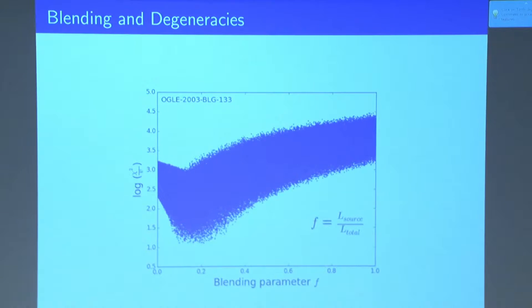So this is a distribution of the chi-squared and the blending parameter, F, which is a ratio of the luminosity of the source to luminosity total. So low blending parameter equals high blending. And in this graph, we see that the best fits, the lowest chi-squared, are in a range of values with low blending parameter and therefore high blending. So they're in a range because this is essentially the degeneracy of the model, which means there's a range of possible model parameters that give the same best fit.